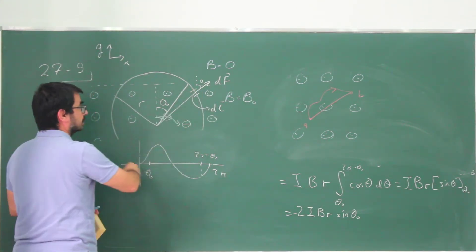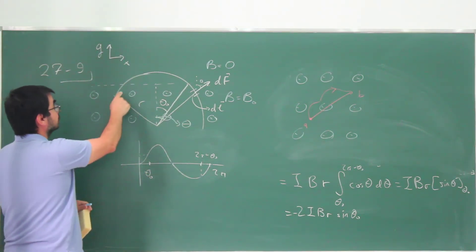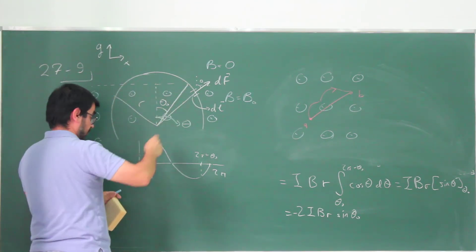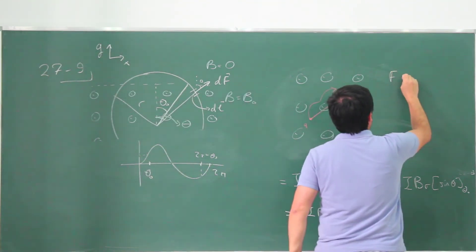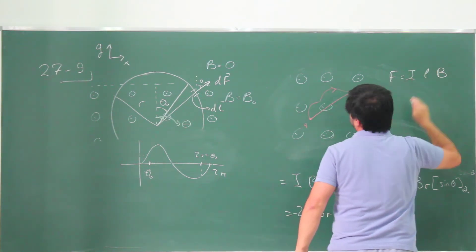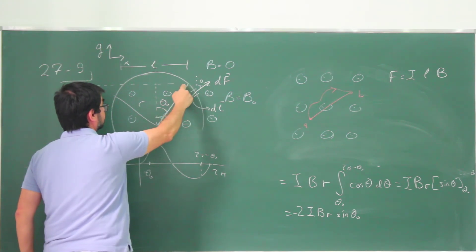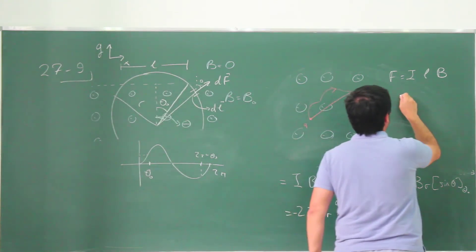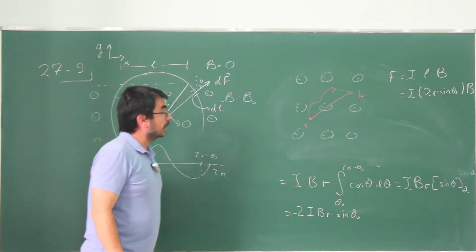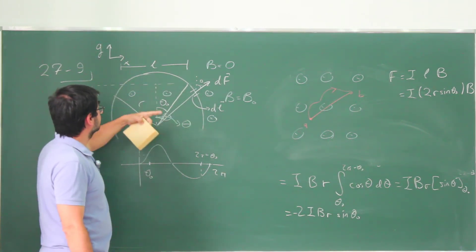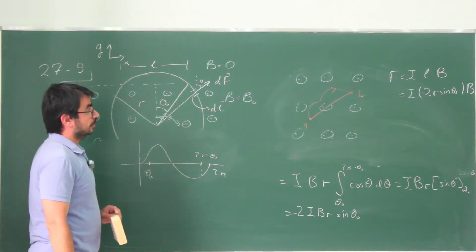We can apply that here: instead of calculating the whole arc in the magnetic field, we can look at the straight line connecting the two intersection points. That distance is twice r·sinθ₀. So the force is F = i·(2r·sinθ₀)·B, which of course agrees with the integral answer. Even the direction can be determined from the current direction using this recipe.